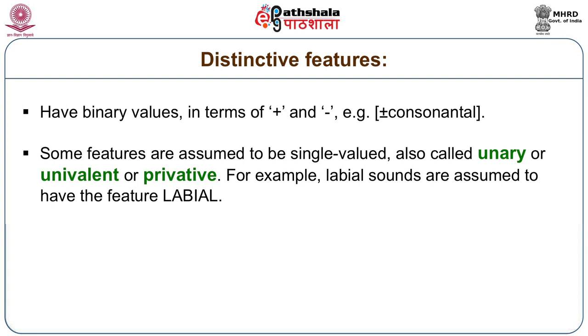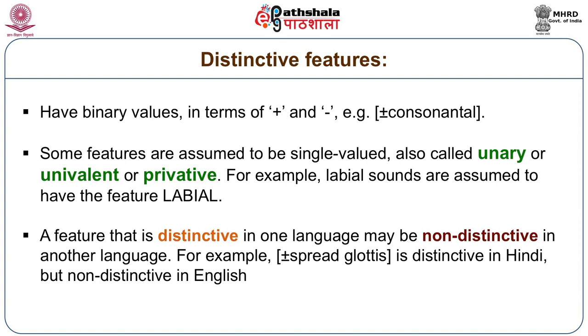The third point is about distinctive features being distinctive and non-distinctive. There are some languages in which a feature may be distinctive, but in other languages the same feature may not be distinctive. For example, in most Indo-Aryan languages, the feature aspiration — for which we have the distinctive feature plus/minus spread glottis — is distinctive because the sounds pa, ph, ba, bh are distinguished. We have minimal pairs, and the meanings of words change if we use one or the other.